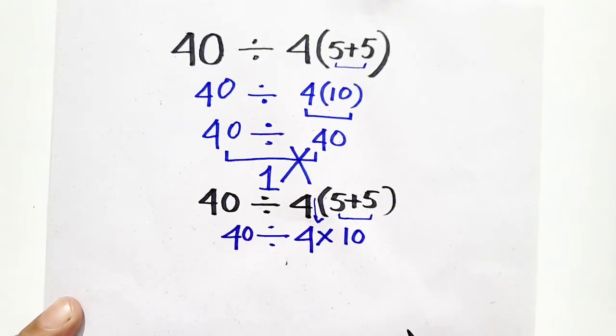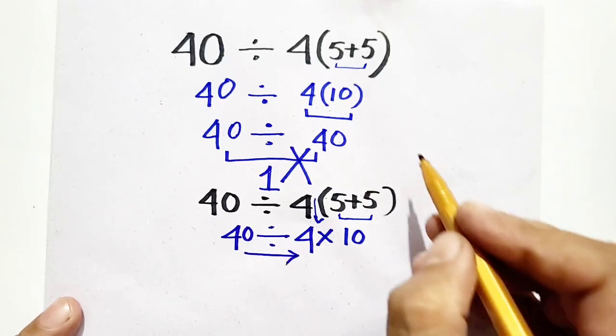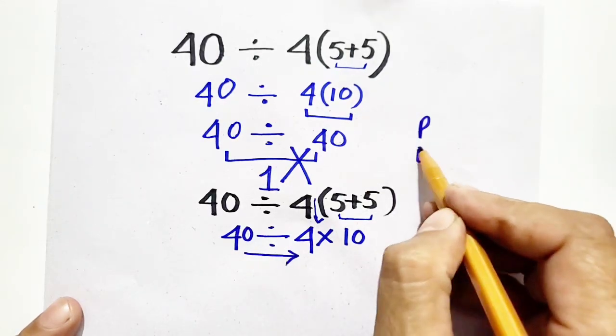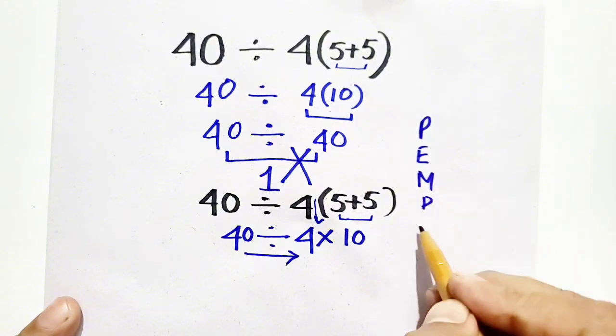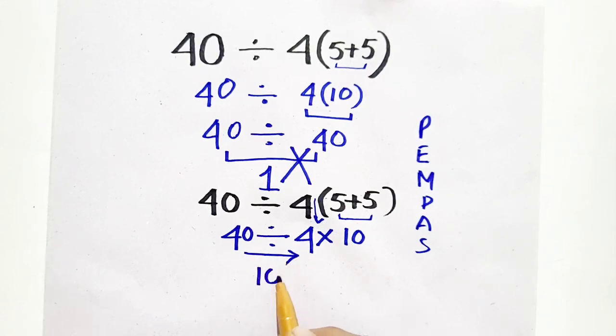40 divided by 4 times 10. Now we have to move from left to right according to PEMDAS rule. So 40 divided by 4 is equal to 10.